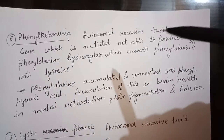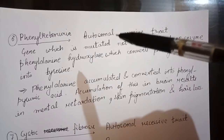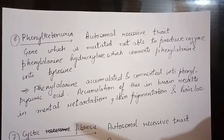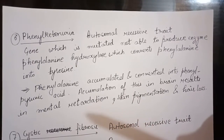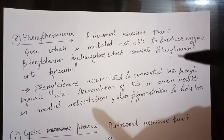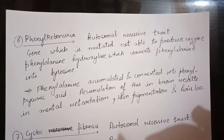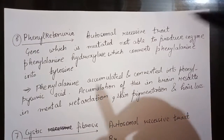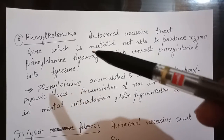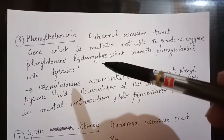Phenylketonuria is an autosomal recessive trait, meaning the mutated gene is present on an autosomal chromosome. Because of this mutated gene, the body is not able to produce the enzyme phenylalanine hydroxylase.